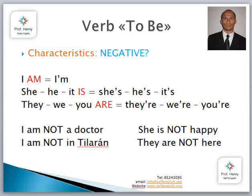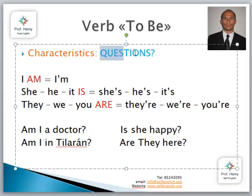How to make a question using the verb to be in the present form — am, is, are? Qué fácil. Am I a doctor? Am I in Tilaran? Is she happy? Are they here? Are you happy? Are you paying attention? Etc. That was regarding the present.